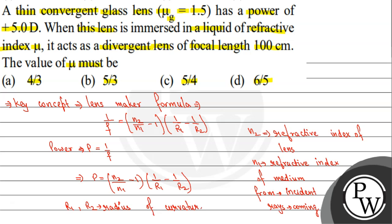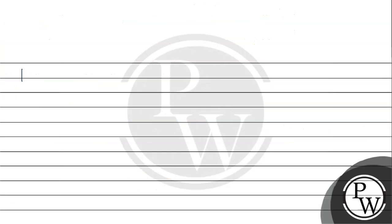First we will place the lens in air, and then we will immerse it in the liquid whose refractive index is μ. The glass refractive index μg = 1.5, so n2 = 1.5. In the first case, the lens is placed in air, and incident rays come from air, so the refractive index of the first medium n1 = 1.